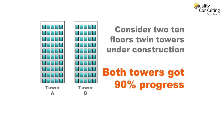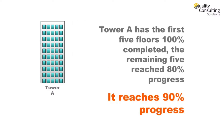Take note of this simple example: imagine two towers under construction of 10 floors each. Both towers have 90% progress. How much is missing to completion? Many people may say there is only 10% completion remaining. But look at the first tower — it has the first 5 floors at 100% and the remaining 5 floors at 80%, so as a whole it reaches 90% progress.